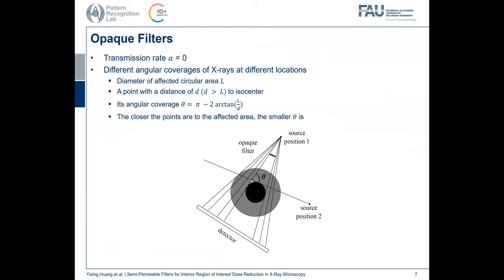we denote the distance from this point to the isocenter by D. This black circular area is the region affected by the opaque filter. We denote its diameter by L. Then we can calculate the angular coverage of this point, which is theta equals pi minus 2 arc tangent L over D. It means that the closer the points are to the affected area, the smaller theta is. For example, for this point, theta is about 80 degrees, which means 100 degrees are missing.